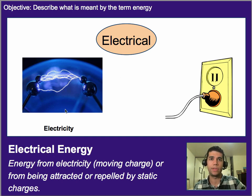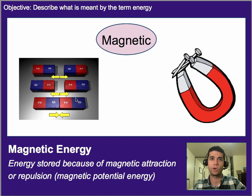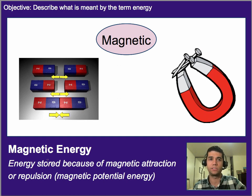We'll talk more about electrical energy later. Common examples are just electricity. Magnetic energy — we already talked about the idea that magnets can attract or repel. This would be magnetic potential energy, though we'll just call it magnetic energy for now, just to give you a sense of it.